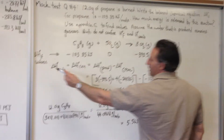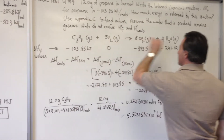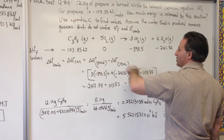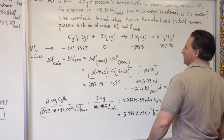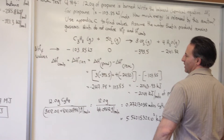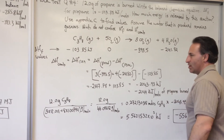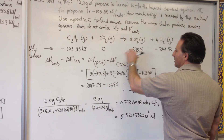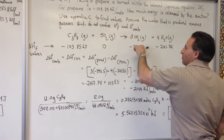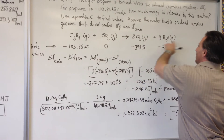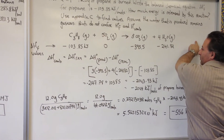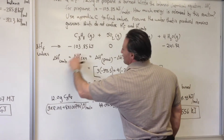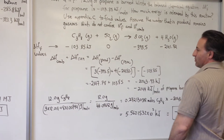Now we look up all the heats of formation of the different substances in the balanced equation. Propane is negative 103.85 — we were given that in the question. The other values are obtained from the appendix of the textbook. You could look them up in the CRC, or they might be given in the question. Sometimes they'll give you three of them and leave one out, and ask you to find the missing one — but then you'd need the value for the whole equation.